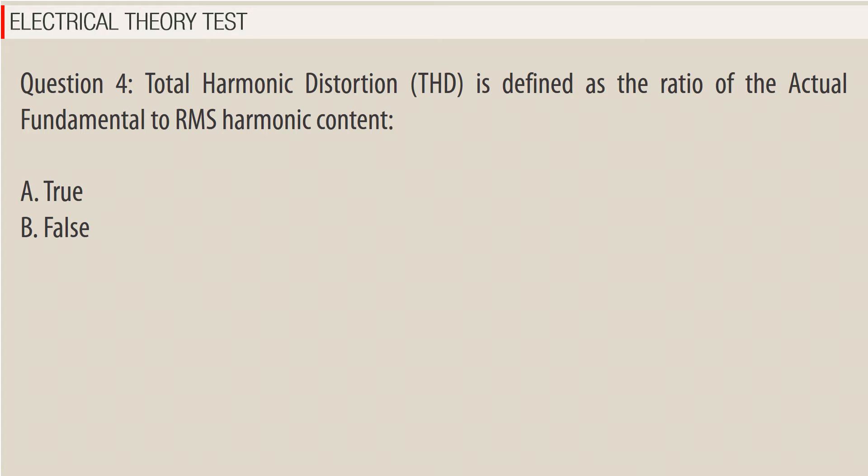Question 4: Total harmonic distortion (THD) is defined as a ratio of the actual fundamental to RMS harmonic content. A. True. B. False.